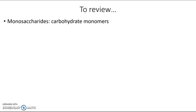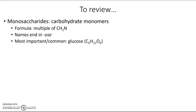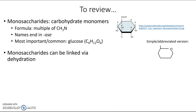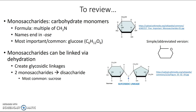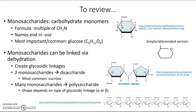To review: monosaccharides are the monomers of carbohydrates. Their formula is always a multiple of CH2O, and their names end with the suffix "-ose". The most important is glucose with the formula C6H12O6 — you need to be able to draw the simplified ring structure. Monosaccharides can be joined by dehydration reactions creating glycosidic linkages. Two monosaccharides form a disaccharide like sucrose; many monosaccharides form a polysaccharide, whose shape depends on whether it has alpha or beta glycosidic linkages.